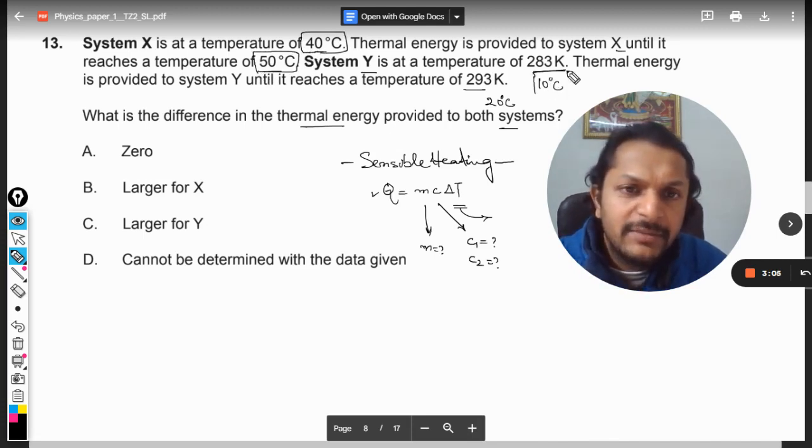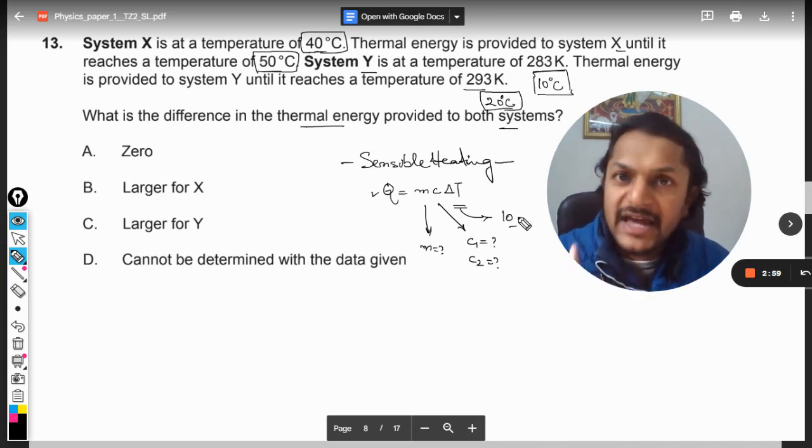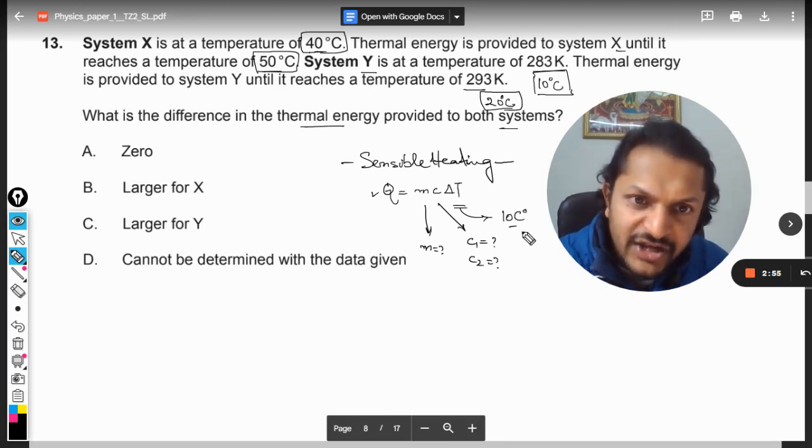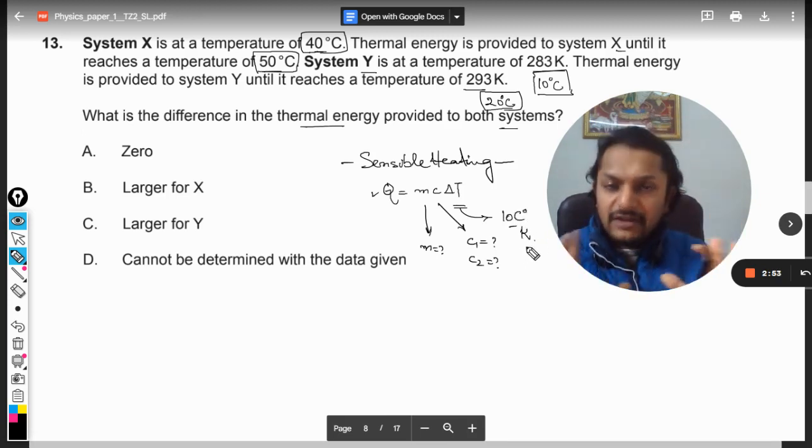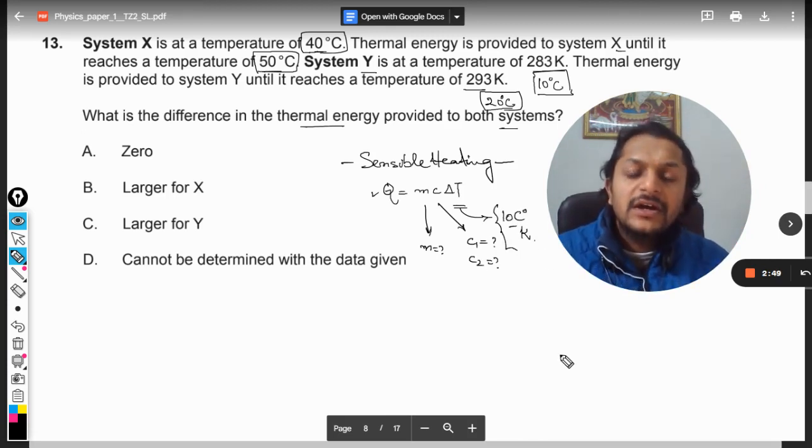So delta T in both of the cases is coming out to be 10 units. You can call it C degree or you can call it Kelvin also. So in both of the cases, this temperature is the same, but data is not given properly.